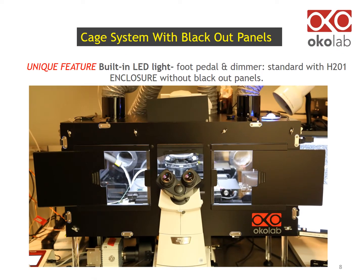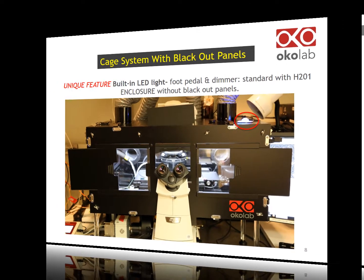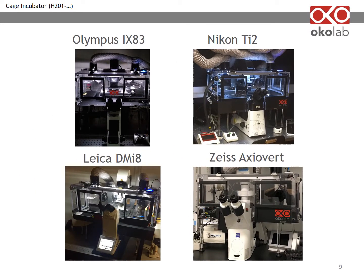This image shows the system installed on a Nikon Inverted Microscope. The enclosure has a standard built-in LED light, operated with a foot pedal and a dimmer. This allows you to clearly see your sample placement on the stage even when the room lights are off. We designed cage incubators for all major microscope brands and models, including Upright.